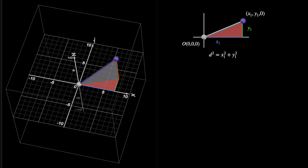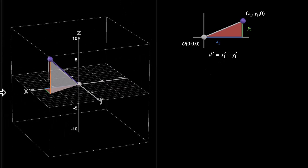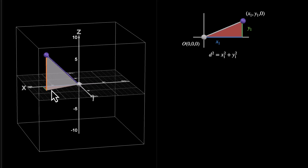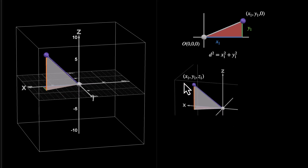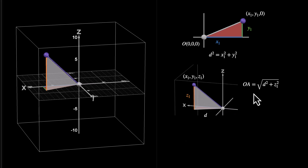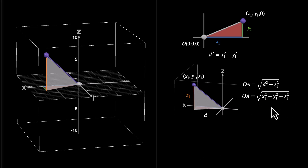Now we know this length d. Moving to 3D, we also know the Z coordinate, z1. We can now figure out the hypotenuse of the second triangle: this purple length is the square root of d² plus z1², and since d² = x1² + y1², our length OA equals the square root of x1² + y1² + z1².